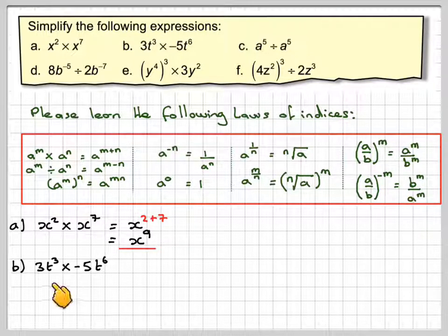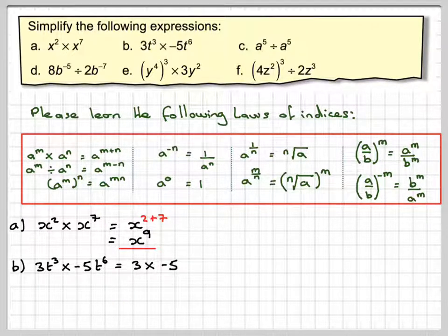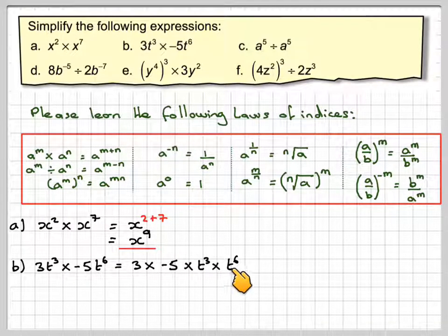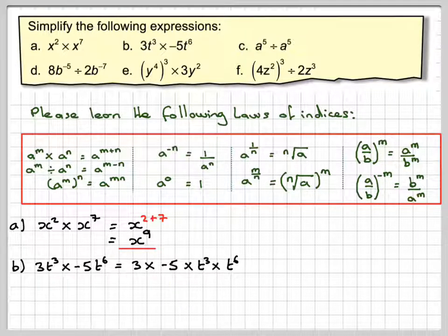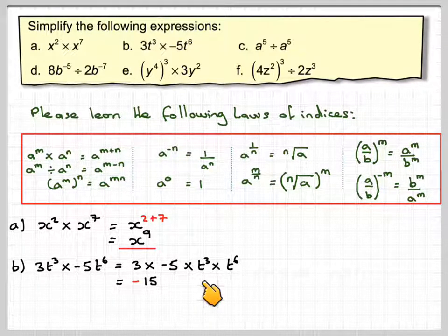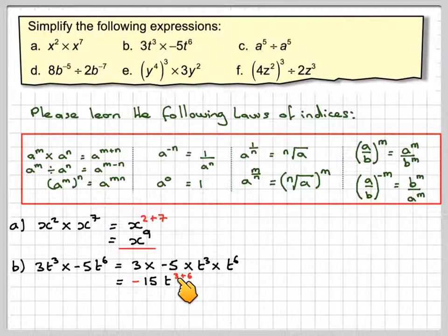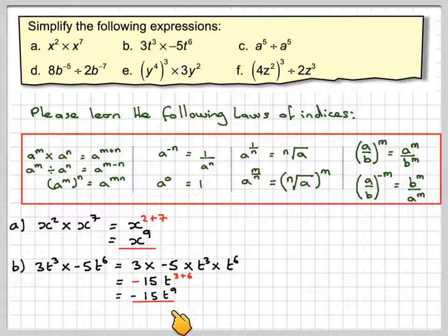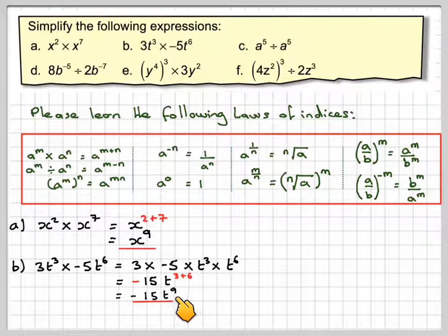Second one, 3t cubed times minus 5t to the 6. Well, we'll put the numbers first, so it's 3 times minus 5, and then put the two letter terms afterwards, times t cubed times t to the 6. Now 3 times minus 5 is minus 15. And then this one, we just apply the first rule again, so it becomes t to the 3 plus 6. They both have the same base, t. So we just add the powers together because we're multiplying. So we've got a final answer of minus 15t to the 9.